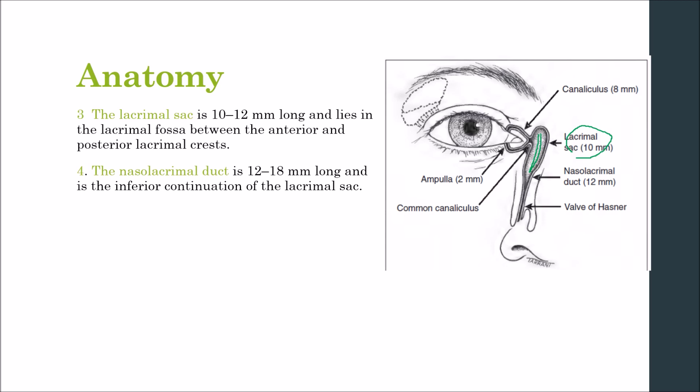The lacrimal bone and the frontal process of the maxilla separate the lacrimal sac from the middle meatus of the nasal cavity. In dacryocystorhinostomy (DCR), an anastomosis is created between the sac and the nasal mucosa to bypass an obstruction in the nasolacrimal duct, which is 12 to 18 millimeters long.